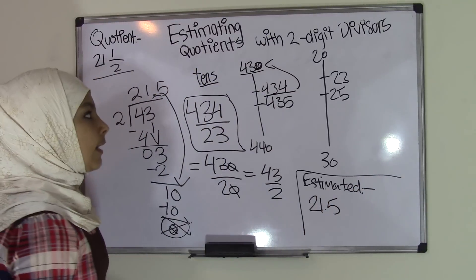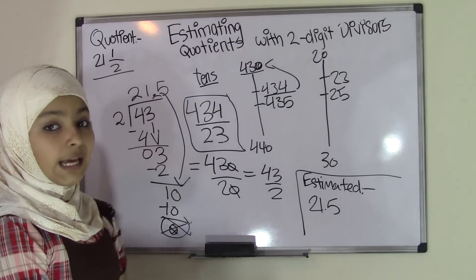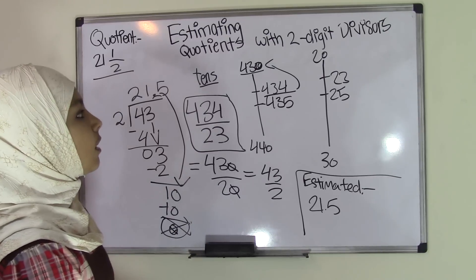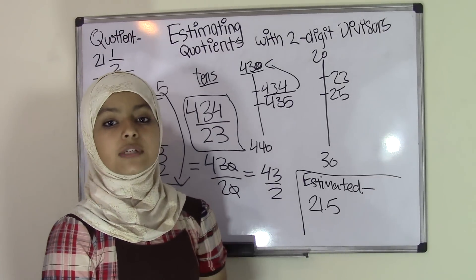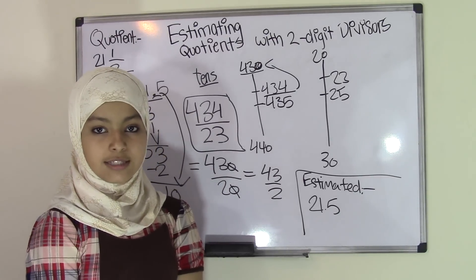So that was really easy, right? Now, if you want to find out more examples on doing these estimated quotients with two-digit divisors, then you can visit our website and we'll see you guys next time.